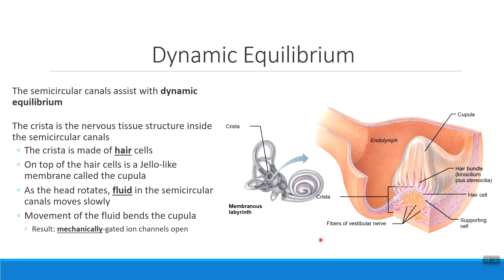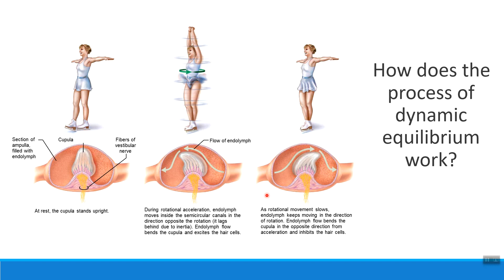Your internal ear actually has three different semicircular canals. By having three canals in different orientations, we collect all kinds of different rotational equilibrium information — some detecting rotation to the left, some to the right. Every moment of every day, we're collecting rotational information in three different planes. Your brain adds together all that information to figure out exactly what's going on with your body.